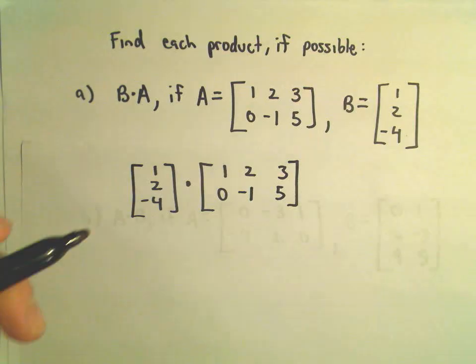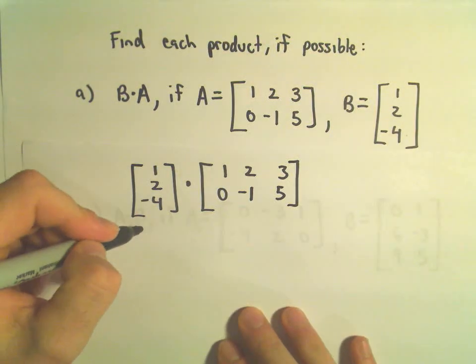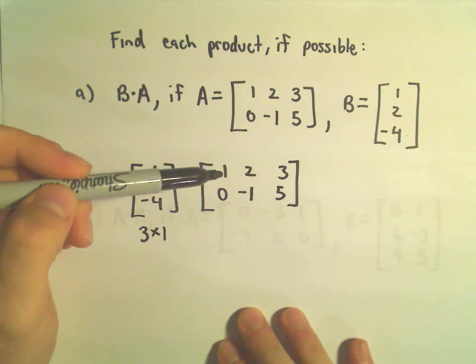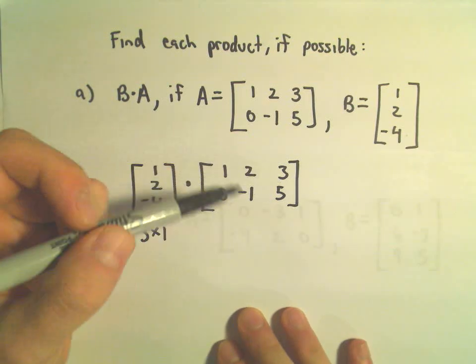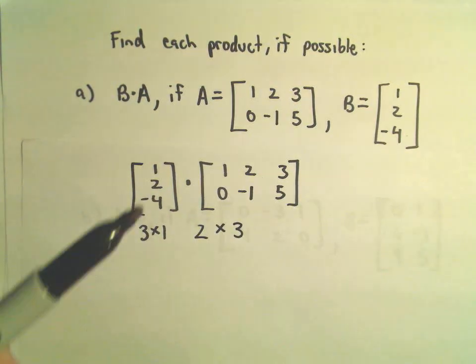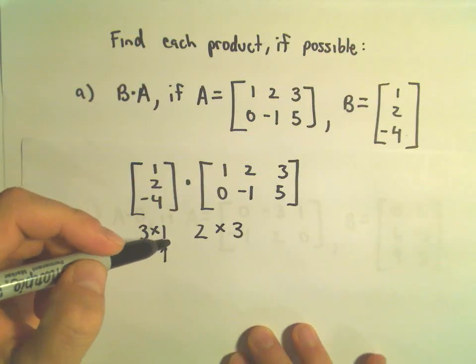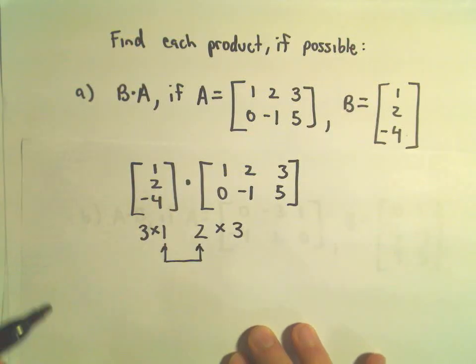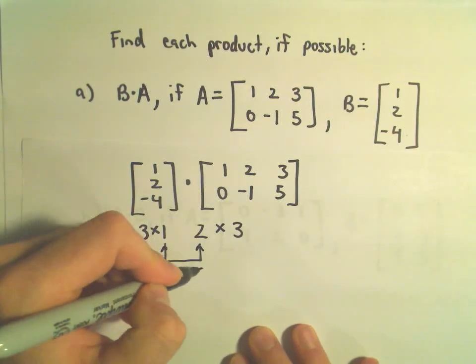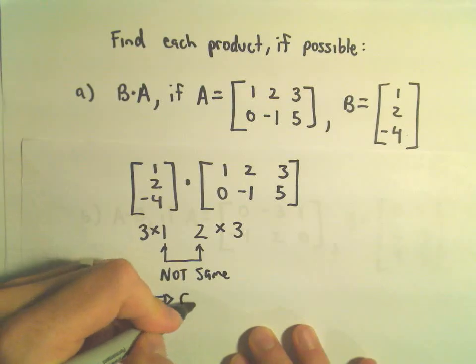One little thing that I always think about is the dimensions. Notice our first matrix is a 3 by 1 matrix. Notice our second matrix is a 2 by 3 matrix. It's got two rows and three columns. If the numbers on the inside are not the same, what that says is these are not the same, what that tells us actually is we cannot multiply.